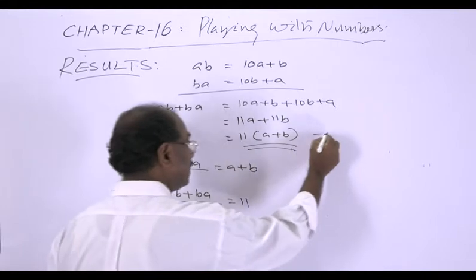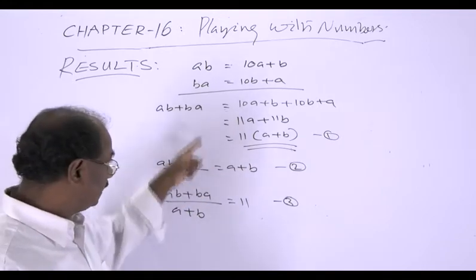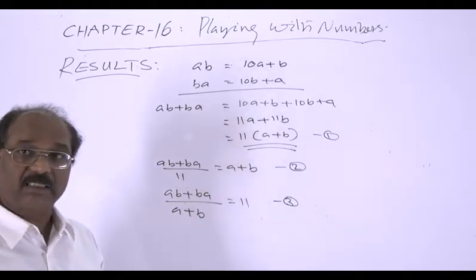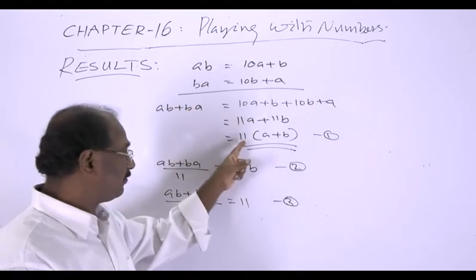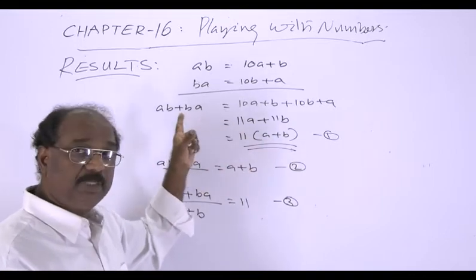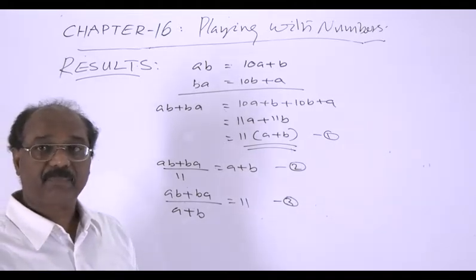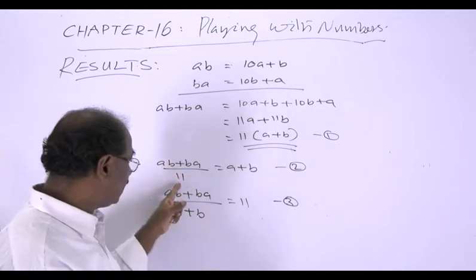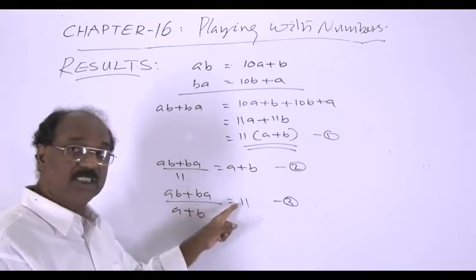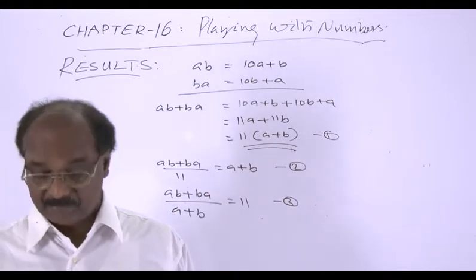So consider these three results. AB plus BA is a multiple of both 11 and A plus B. So 11 and A plus B are factors of the sum of the two-digit number and its reverse. When the sum is divided by 11 the quotient is A plus B, and when the sum is divided by A plus B the quotient is 11. Keep this in mind for problems.